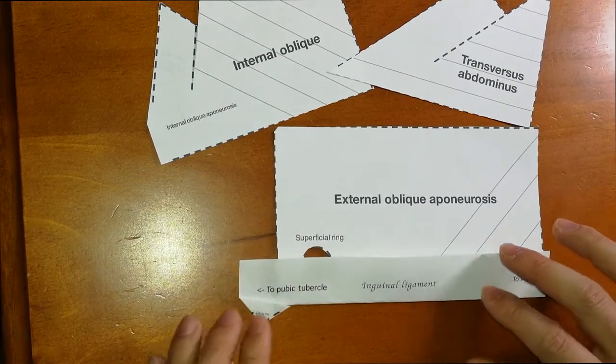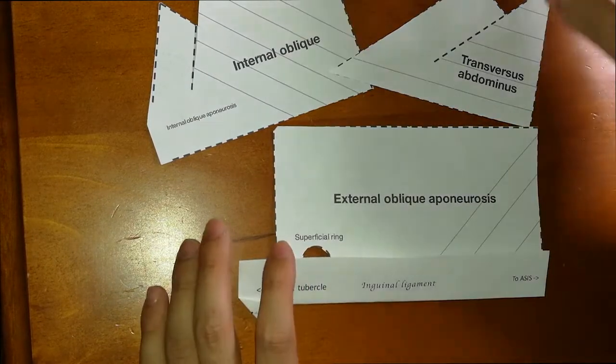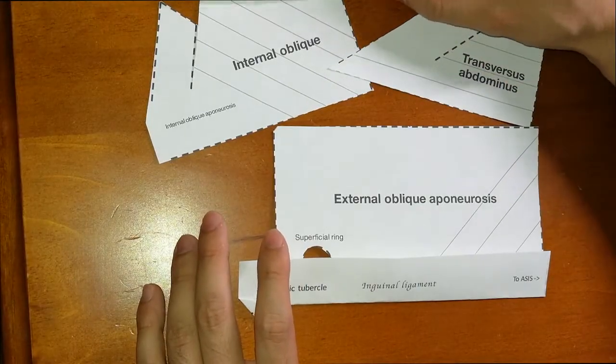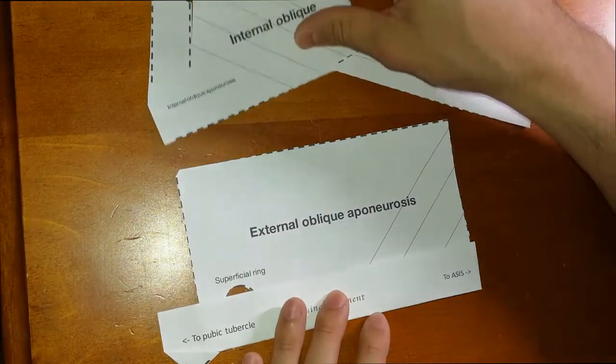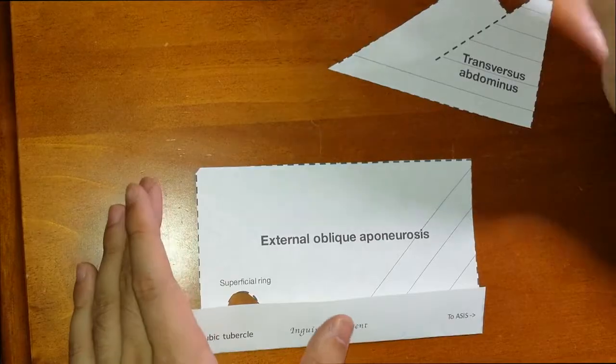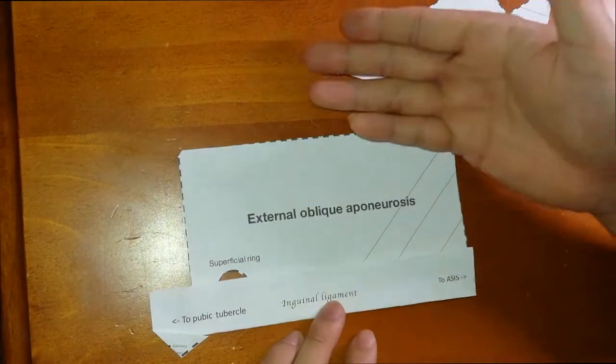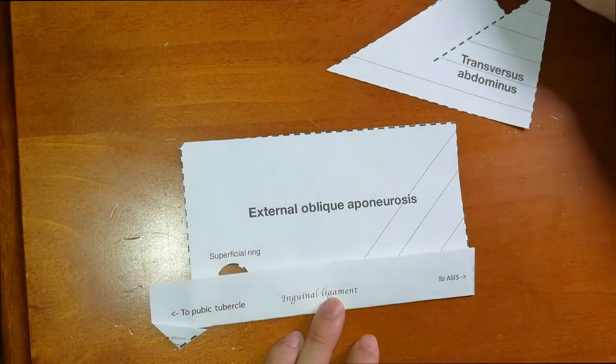If you remember the mnemonic, it helps form the floor of the inguinal canal, the inferior border. We're working from outward in, superficial to deep.